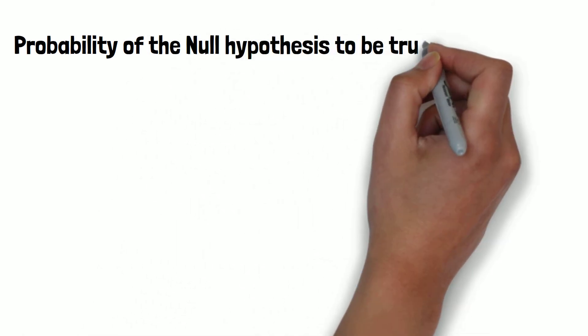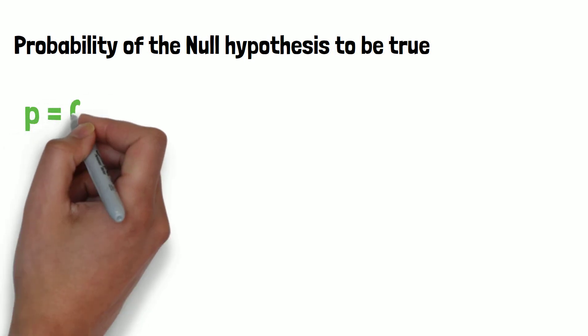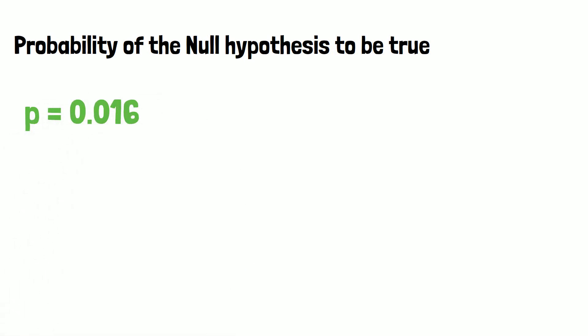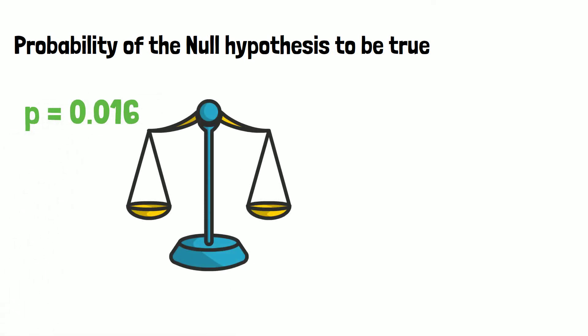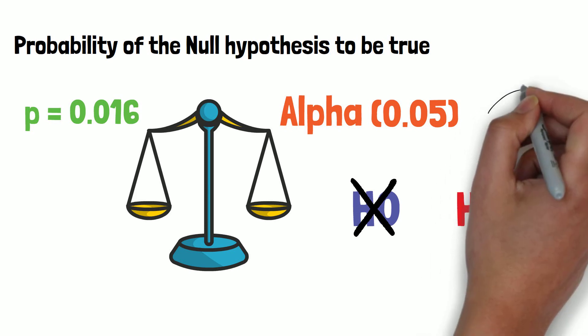Based on the outcome of the experiment, we know the probability of null hypothesis being true in our setting. For example, p equals 0.016 or 1.6%. This probability is then compared to a threshold called alpha to see if we can reject the null hypothesis in favor of the alternative hypothesis. Very often alpha is said to be 0.05. But this will be explained in another video.